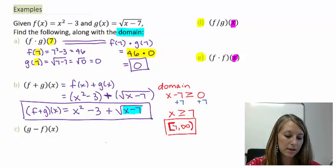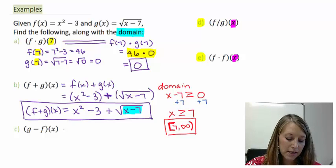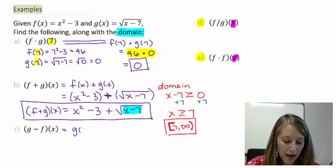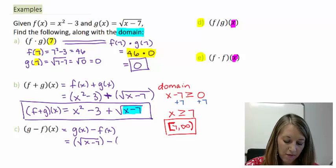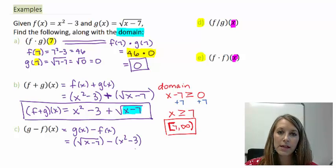Part C, same process. G minus f of x is g of x minus f of x. So my g of x is the square root of x minus 7, minus my f of x is x squared minus 3. Notice I substituted them both in with parentheses.